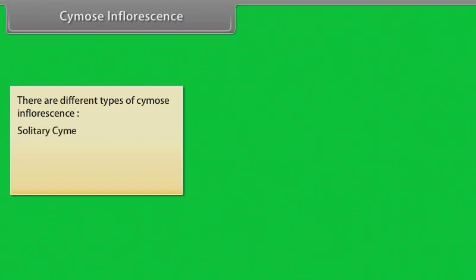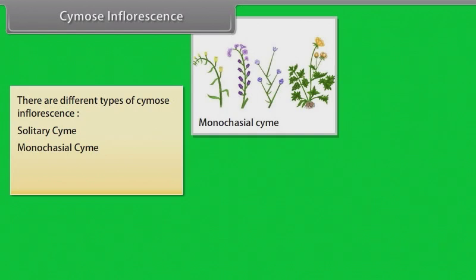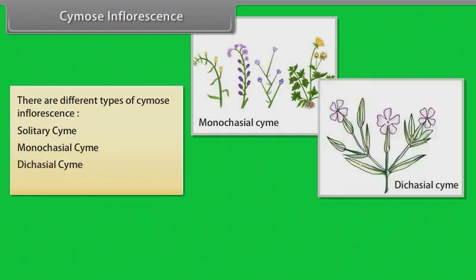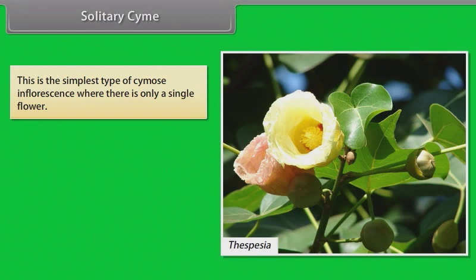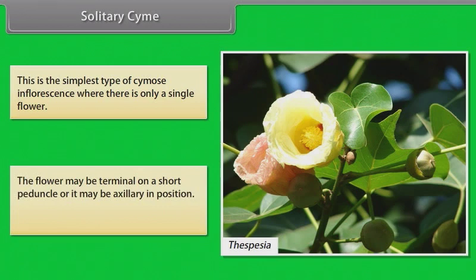There are different types of cymose inflorescence: solitary cyme, monocasial cyme, dicasial cyme, and polycasial cyme. Solitary cyme is the simplest type of cymose inflorescence where there is only one single flower. The flower may be terminal on a short peduncle or it may be axillary in position. Example: Thespesia.